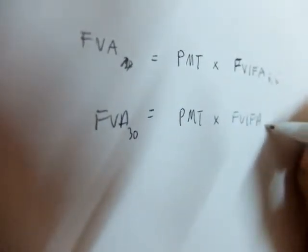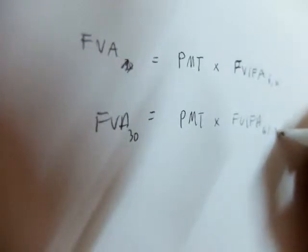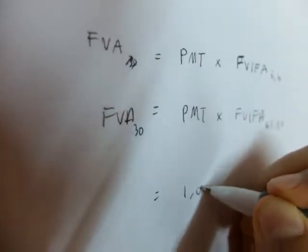Your i is 6%, your N is 30 years. So your payment is 1000.